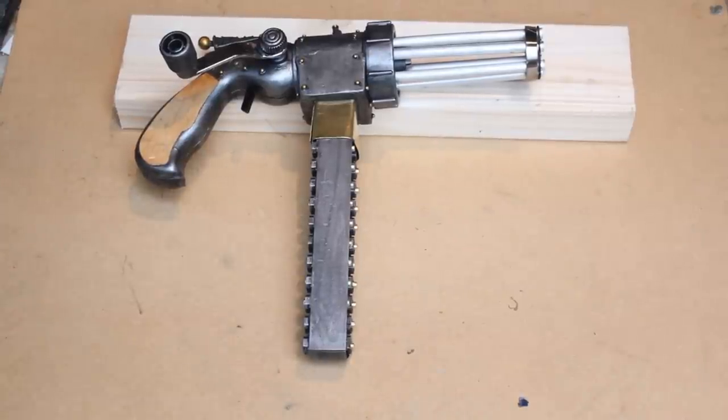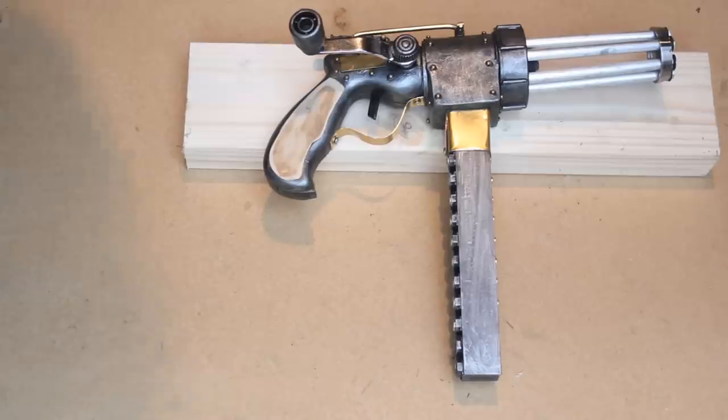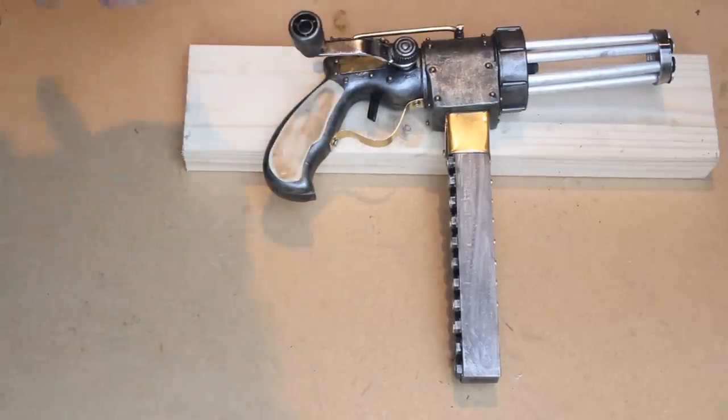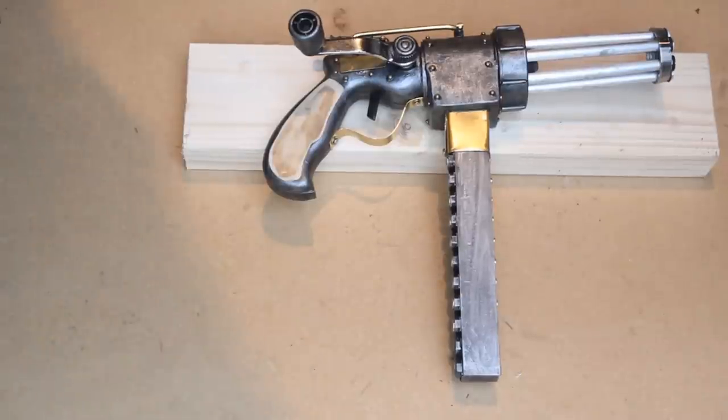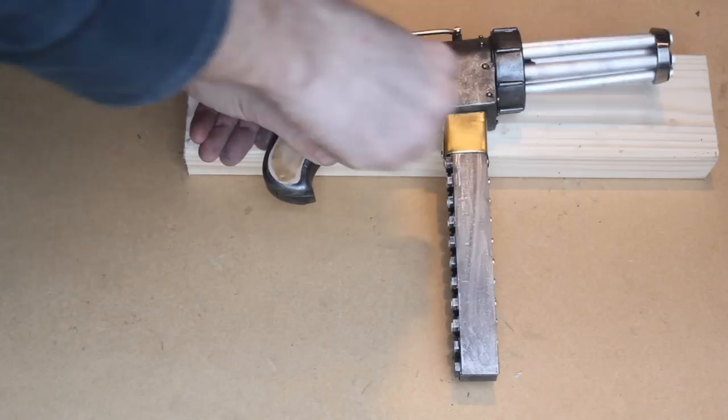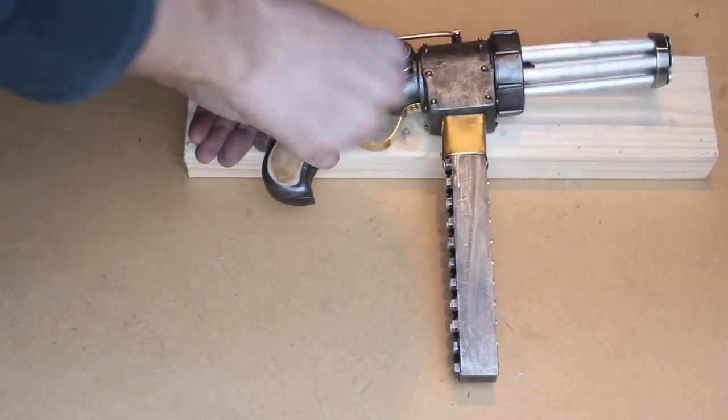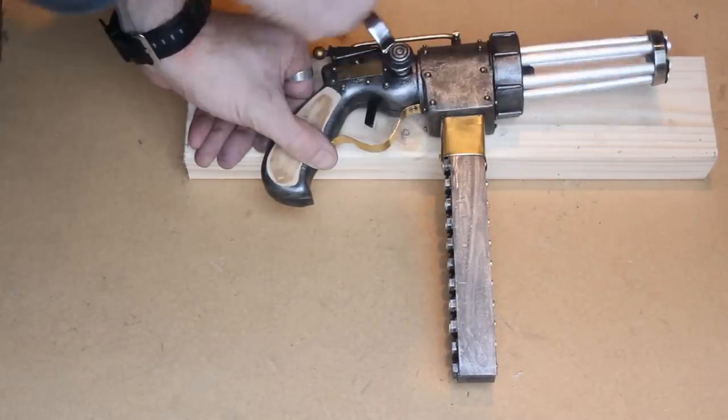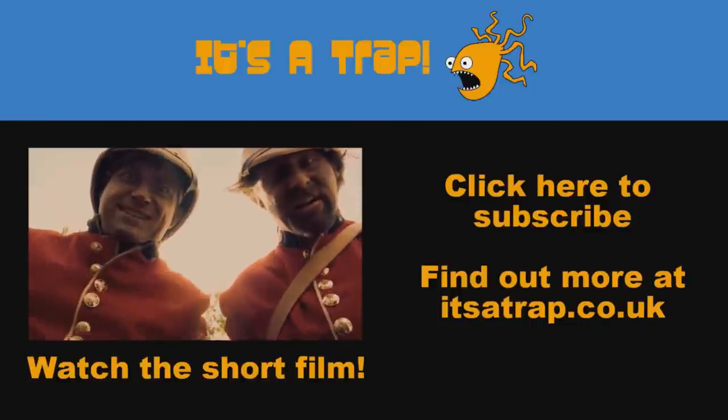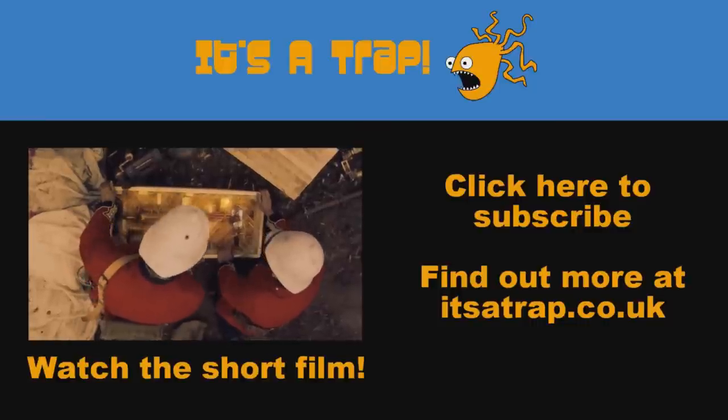I've now reattached the handle to the side which is simply bolted into place. I've added a brass piece of metal for a trigger guard and a pipe across the top for additional detail. In the same way as the submachine gun we've already built, this works as a clockwork mechanism. So rotating the handle gives you rotating barrels.